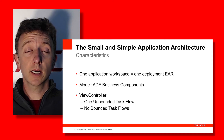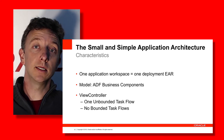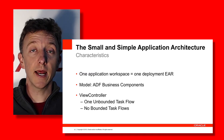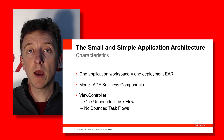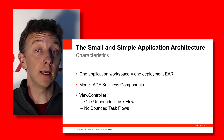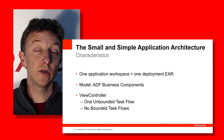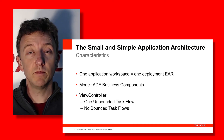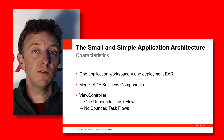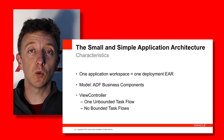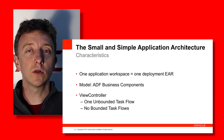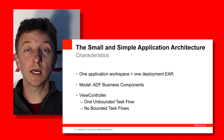The small and simple architectural pattern is already familiar if you've done any development with JDeveloper and ADF. You would have used the Create Application wizard and the Fusion Web Application template, which creates one application workspace, one deployment artifact — an EAR file — and two projects: a Model and a View Controller. The Model project is made up of ADF Business Components, and the View Controller has at least one unbounded task flow. For this pattern, no bounded task flows are used — hence the name small and simple.